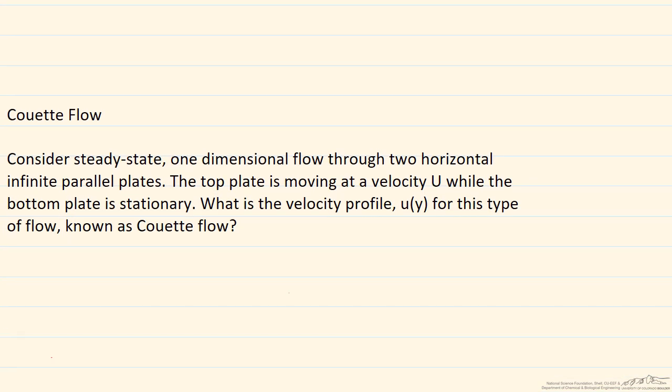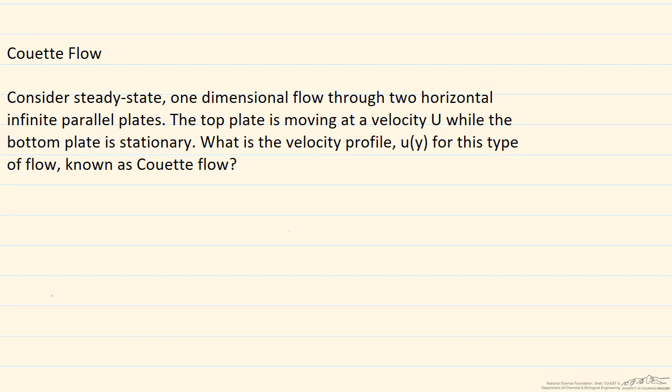So here, we're going to look at a specific type of flow and determine its velocity profile. This is what's known as Couette flow. It's steady state, one-dimensional, incompressible flow. You have two horizontal, infinite parallel plates. The top plate is moving at a velocity U. The bottom plate is stationary, and we're looking in the y direction. We'll call this zero, and the distance between the two plates is h.